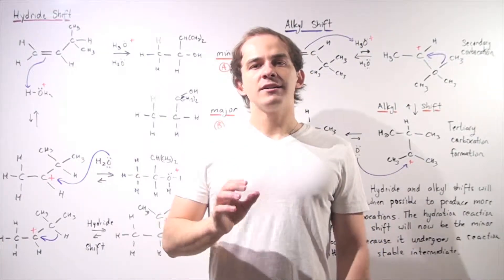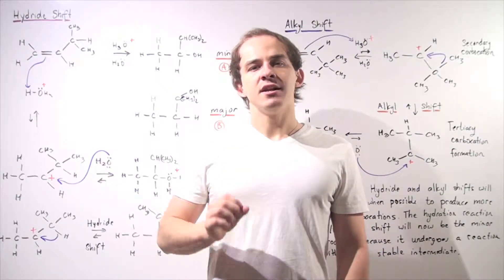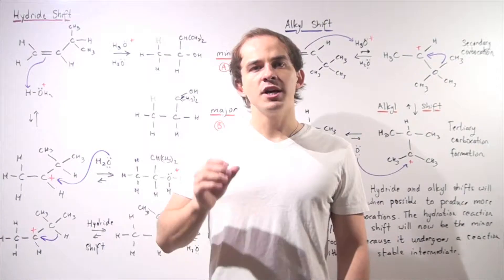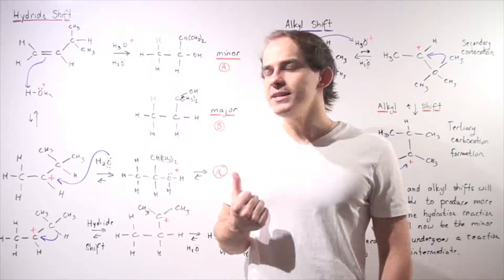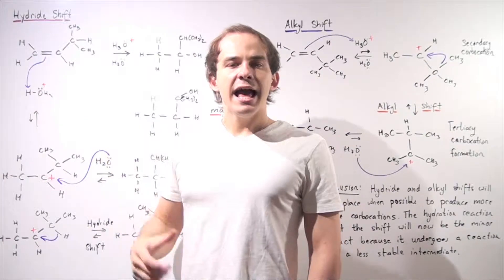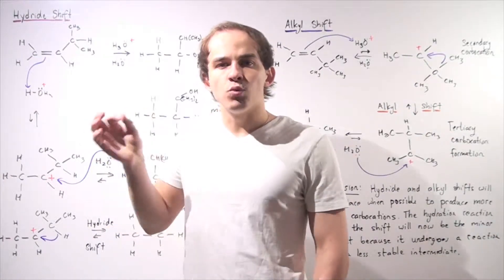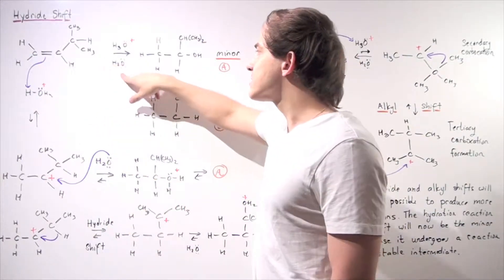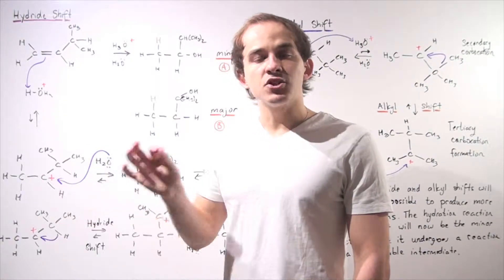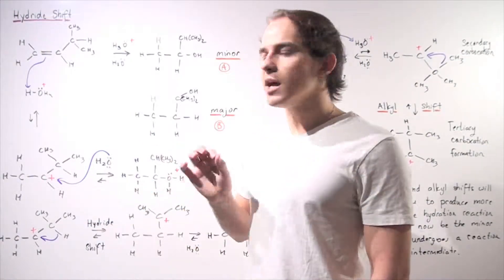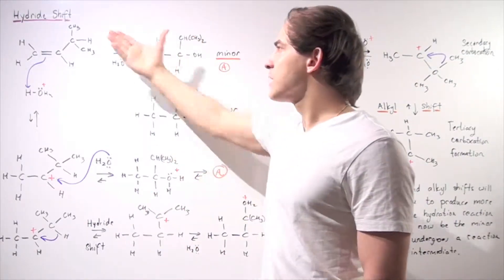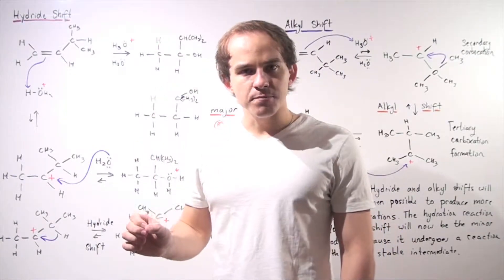Let's continue our discussion on hydration reactions and look at the following reactants. We take an asymmetrical alkene, place water as our solvent, and add a trace amount — a small amount — of our acid catalyst, in this case hydronium.